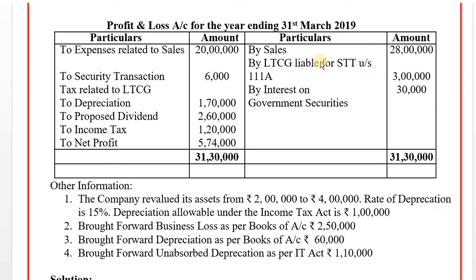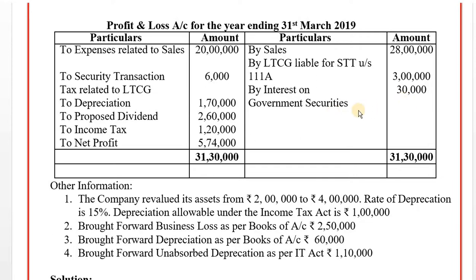On the credit side, sales of Rs. 28 lakh are business income. Long-term capital gain liable for STT under Section 111A — up to Rs. 1 lakh exemption applies, but this goes under the capital gains head, so Rs. 3 lakh is excluded from business income. Interest on government securities goes under other sources and is also excluded from business income.